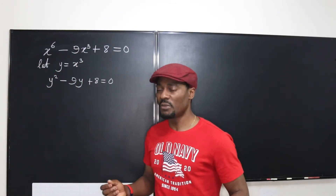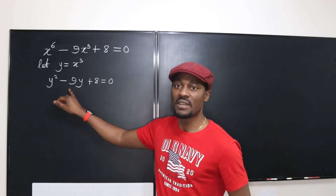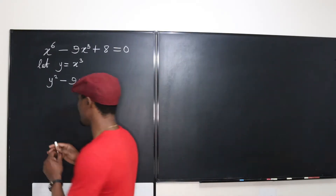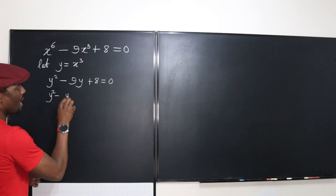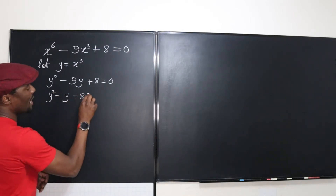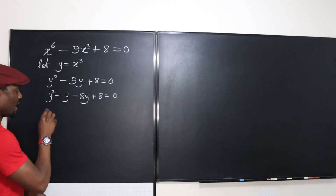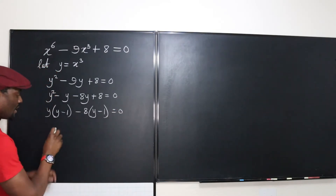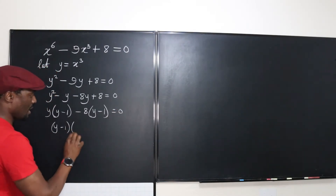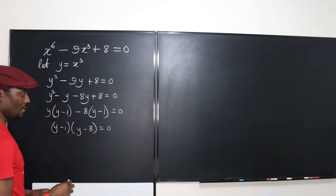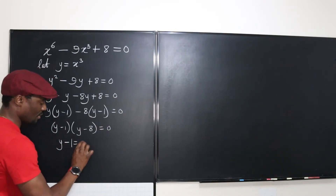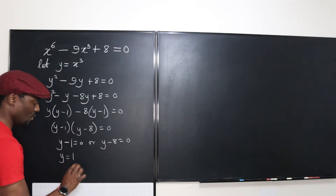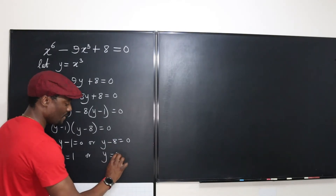What two numbers multiply to get 8, but when you add them you get negative 9? Those two numbers are negative 1 and negative 8. So I'm going to factor: y squared minus y minus 8y plus 8 equals zero. I can write y times (y minus 1) minus 8 times (y minus 1) equals zero, which gives (y minus 1)(y minus 8) equals zero.